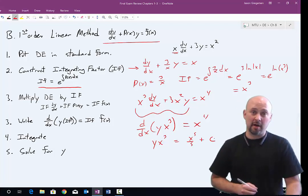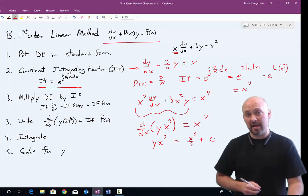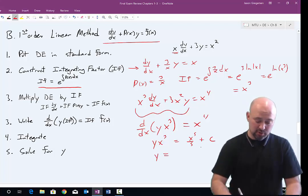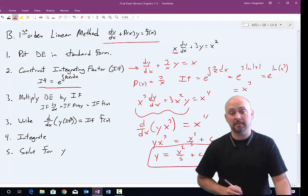And then my last step is just to solve for y. So to do that, I'll multiply it through by x to the negative three. I will get y is equal to x squared over five plus c times x to the negative three. And that will be my final solution.